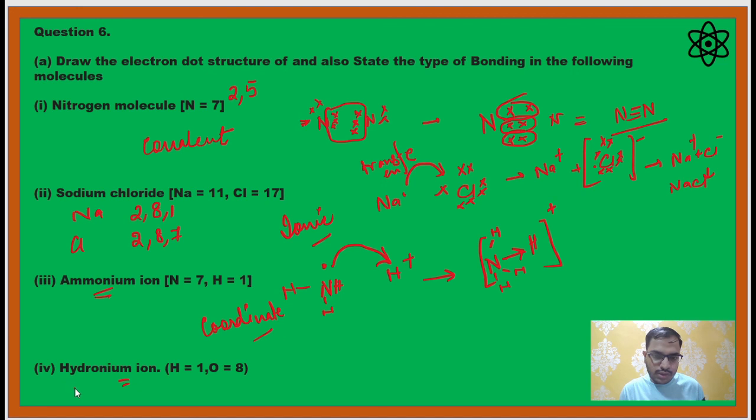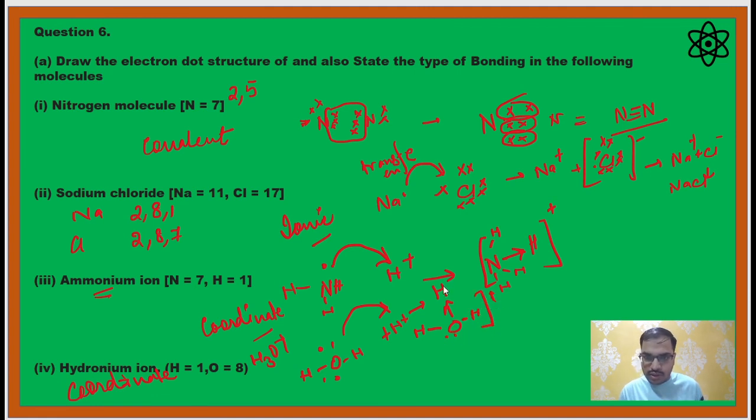For hydronium ion, the bond is coordinate only. That is H3O+. You need to begin from the formation of water. Oxygen has two lone pairs, and one of the lone pairs will be accepted by hydrogen ion. So oxygen has donated one lone pair to form a coordinate bond. So oxygen is the donor and hydrogen is the acceptor. You are also asked one more question: define lone pair. So you need to learn the definition of lone pair.